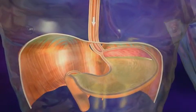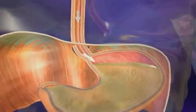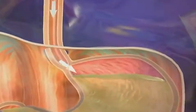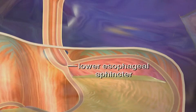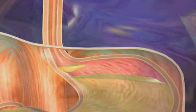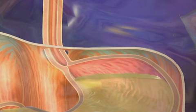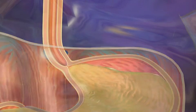At the junction of the esophagus and the stomach lies a muscle called the lower esophageal sphincter, which opens to allow food to enter the stomach and then closes to keep food and stomach acids from flowing back into the esophagus.